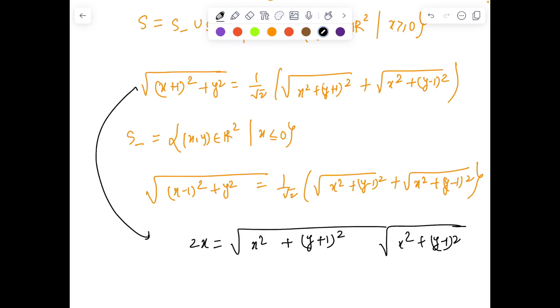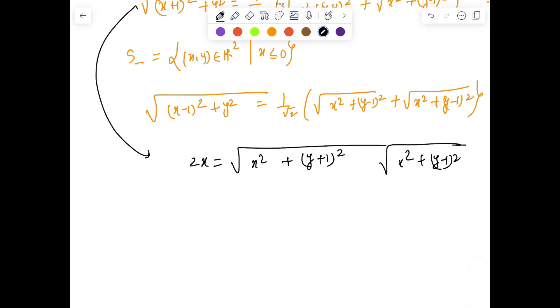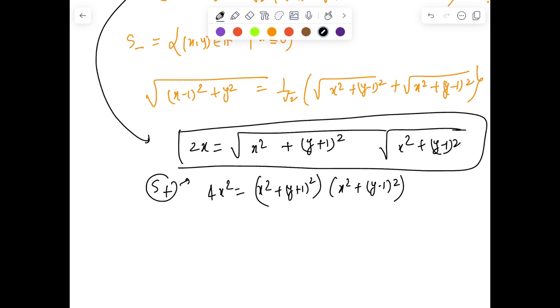Because exactly you can see half of them will get cancelled. Thus S⁺ is a set of all points in R² satisfying this equation with x ≥ 0. We square it again and we'll get 4x² equals (x² + (y+1)²) times (x² + (y-1)²).